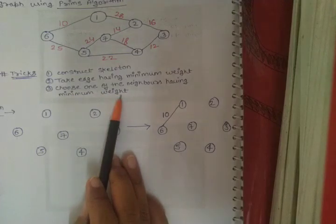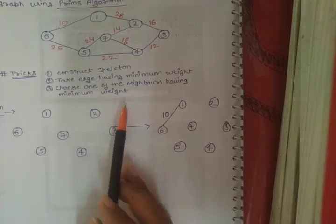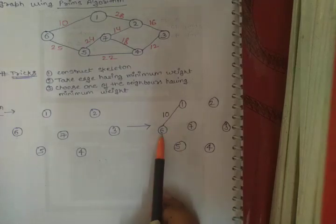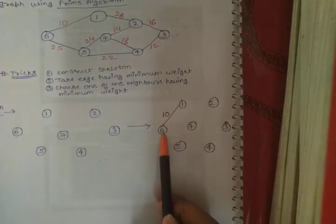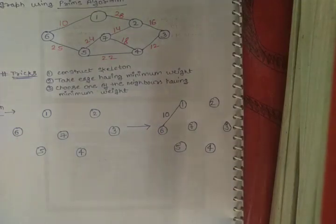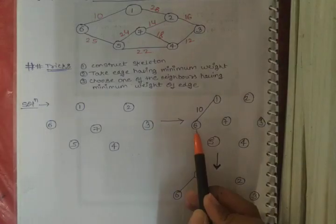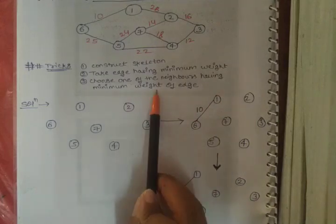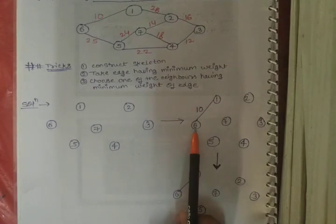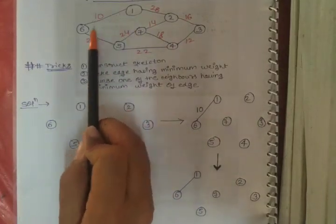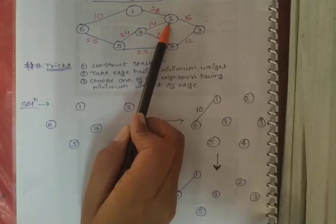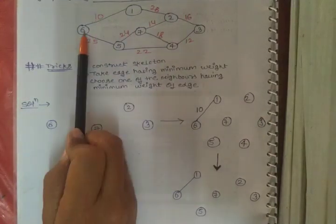We have to choose a neighboring node with a minimum weight edge. We look at the neighbors of both selected nodes - node 1 and node 6. These two nodes are already selected by the edge. The neighbor of node 1 is node 2 only, and the neighbor of node 6 is node 5 (node 1 is already selected so we skip it).